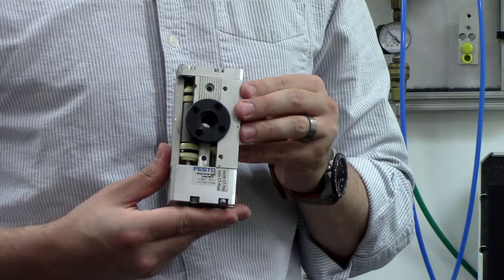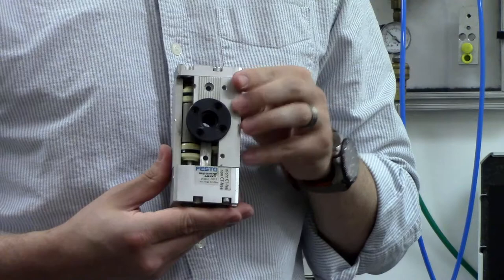Another type of rotary actuator is the rack and pinion. The working principle of a rack and pinion actuator is also very similar to that of a double acting cylinder.